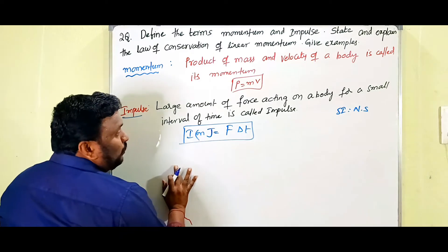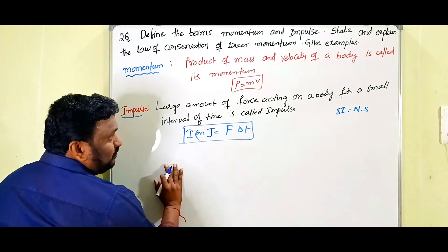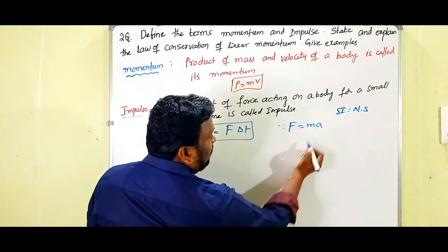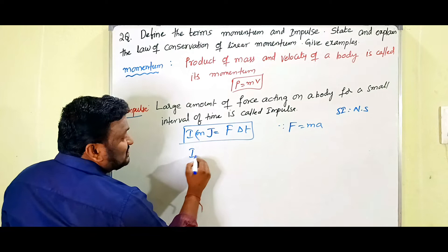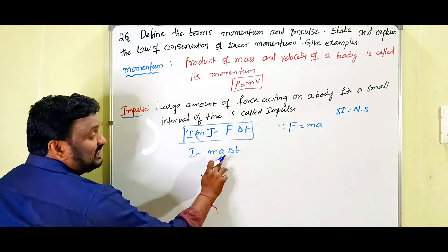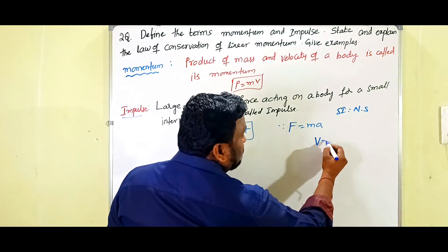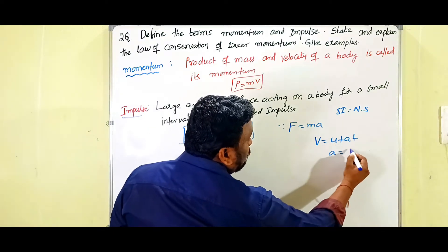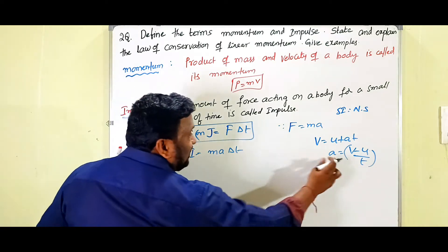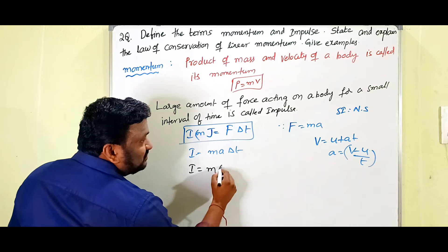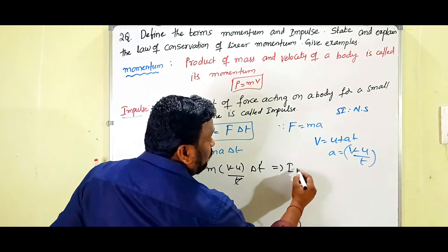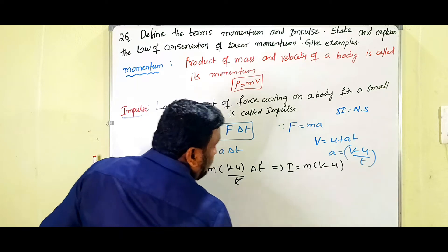Now we have to derive the relation between impulse and momentum. We know that F = ma, so I = F·ΔT = ma·ΔT. We also know that v = u + aT, so a = (v - u)/T. Substituting: I = m·(v - u)/T · ΔT, and T cancels, giving I = m(v - u).